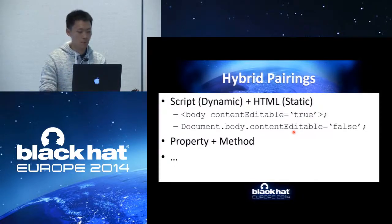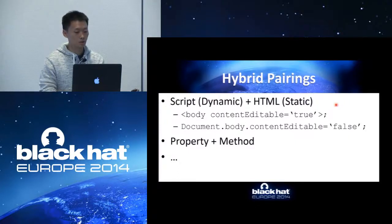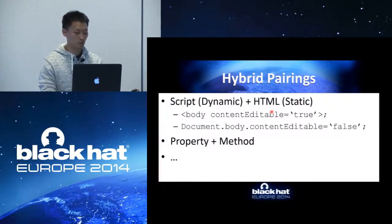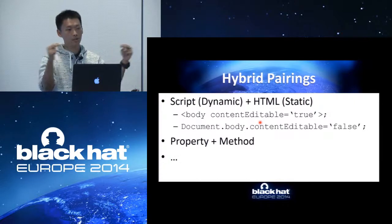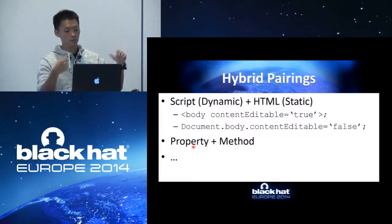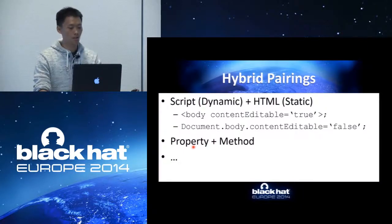The third type is hybrid pairings. We found that if we only fuzz in the dynamic part, we will only find vulnerabilities related to the dynamic part. So in order to increase coverage, we need to add the static part. Our fuzzer will also cover static part fuzzing — for example, assigning an attribute in the static part randomly, then changing that attribute in the dynamic part. This concept also applies to changing a property with a statement, then later changing it again with a method — changing one thing from two different parts. That's the meaning of hybrid pairing.